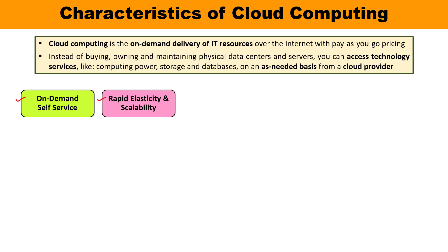The second characteristic is rapid elasticity and scalability. IT resources available on the cloud are provided to clients depending upon the requirement, and clients have to pay depending upon usage. Computing services can be scaled up and scaled down depending upon the requirement. If more IT resources are required, they can be utilized; if less are required, accordingly the client pays. Whenever the client requires services, they will be provided and scaled out as soon as the requirement is over.